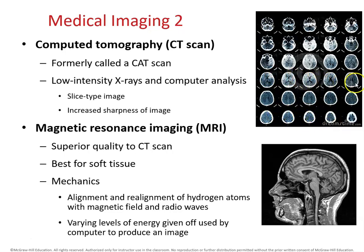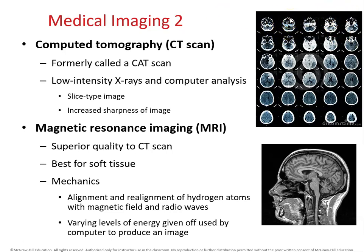Through the brain, we can see the image maybe at the level of the eyeballs. And then here we have the sinuses exposed, so this is going to be at the level of the cheeks and below the nose. And then this slice is going to be closer to the level of the chin.